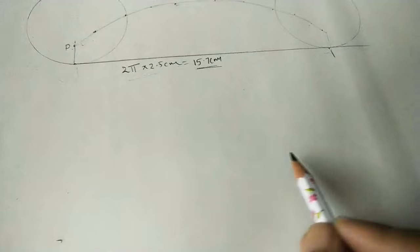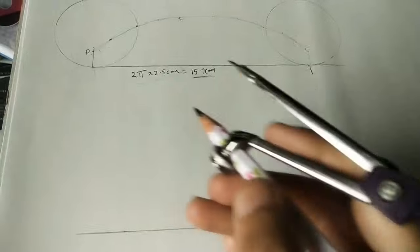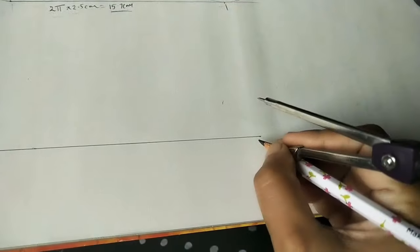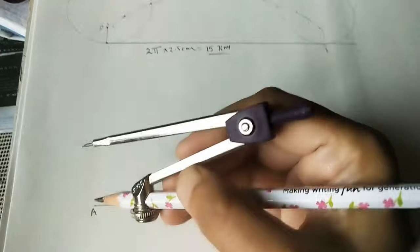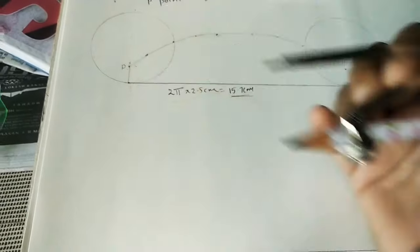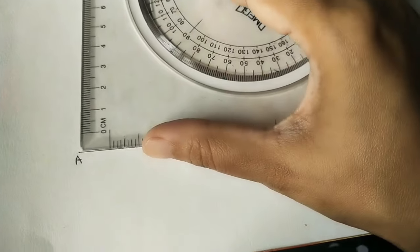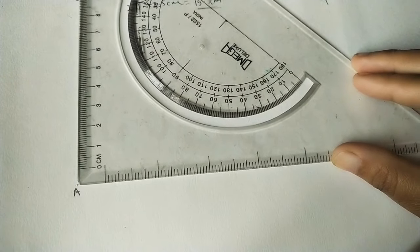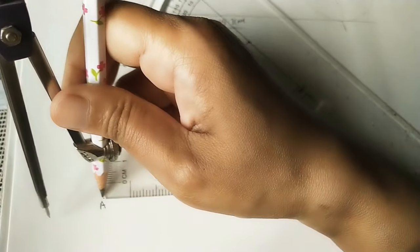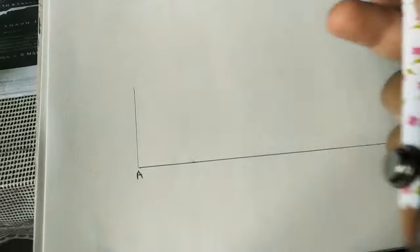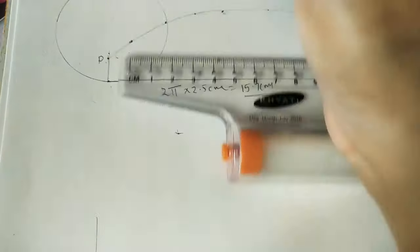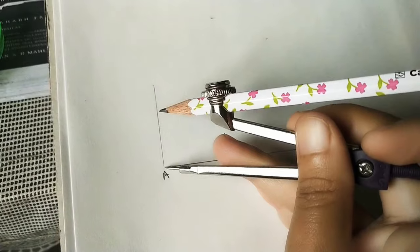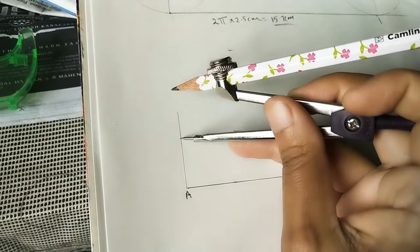Draw the baseline of 15.7 cm using a scale. Name this horizontal straight line AB. At the starting point A, draw a vertical line at 90 degrees using a protractor. On this vertical line, mark the center of the circle by measuring the radius of 2.5 cm using a compass. Mark this as center C, then draw the circle.